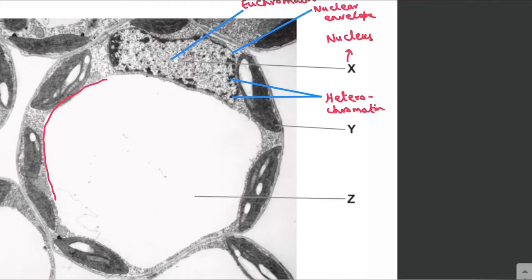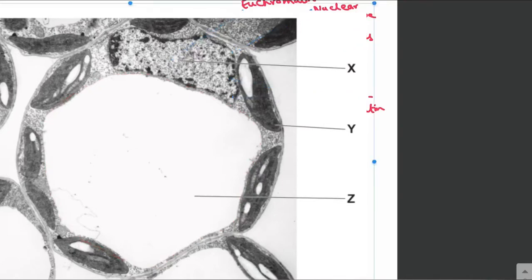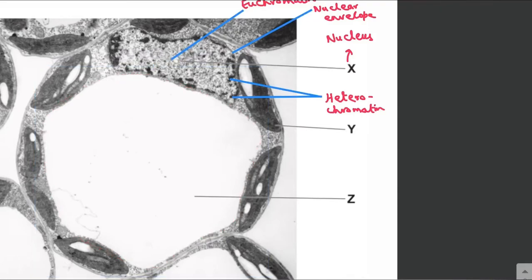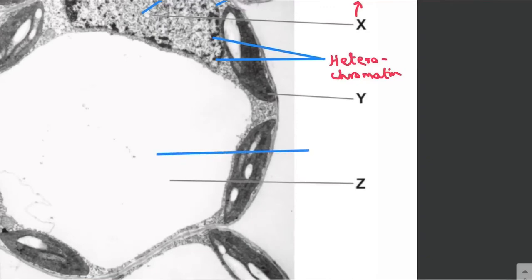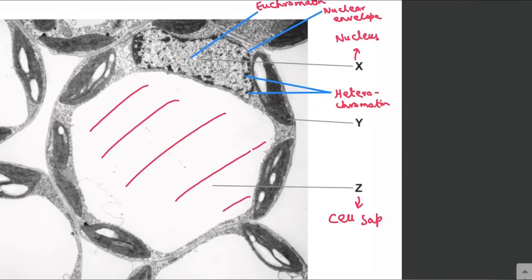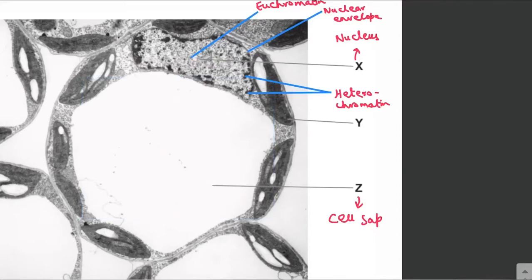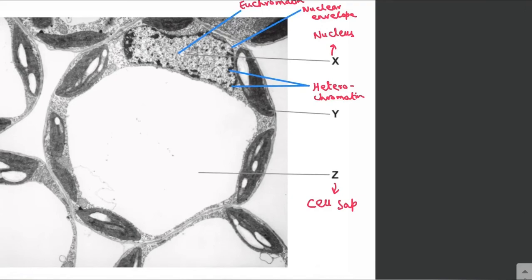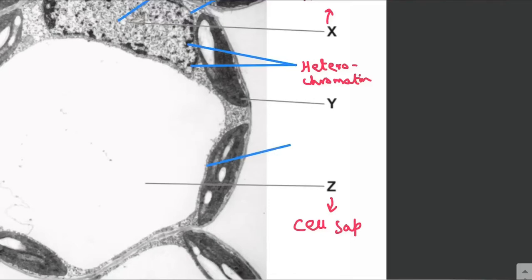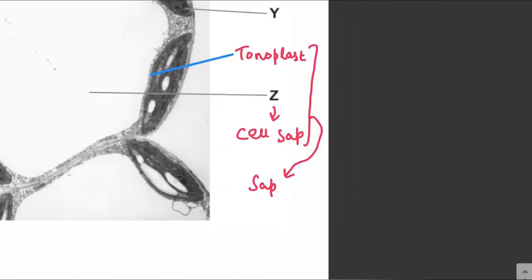The empty space in the center that we see is basically the space where there is cell sap. So this fluid is the cell sap found in the sap vacuole. When we observe these cells under the electron microscope, we see an empty space in the center where actually there is a fluid called cell sap, and the boundary of this fluid is the tonoplast. The tonoplast together with the cell sap makes up the sap vacuole, which is a large central vacuole in the plant cell.